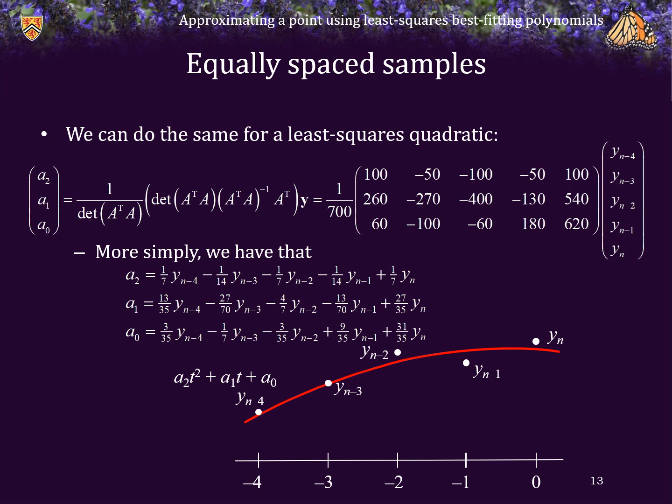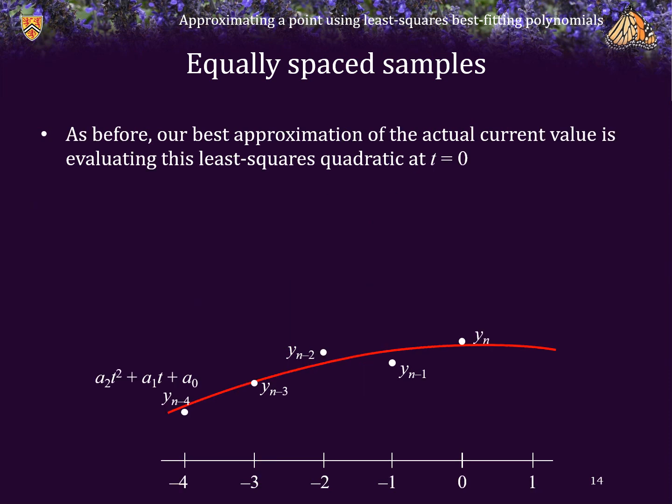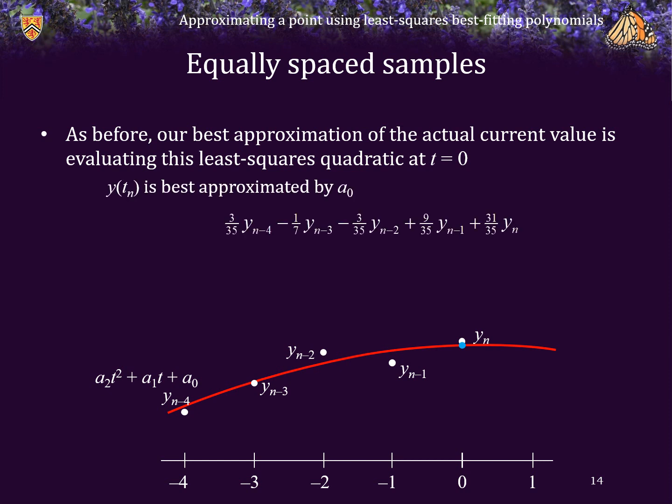We can now plot this least squares best fitting quadratic polynomial, and it should be reasonably close to the points we are estimating. As before, our best approximation of the actual current value is not the last reading, because it has significant error. Instead our best approximation is obtained by evaluating this least squares best fitting quadratic polynomial at t equals 0. Since t equals 0, the best approximation is just the coefficient a-naught.